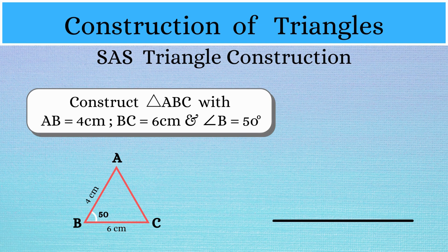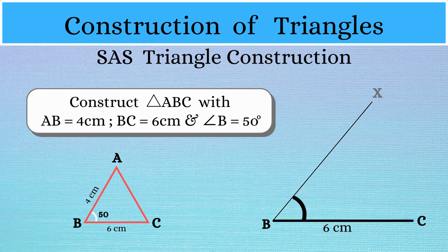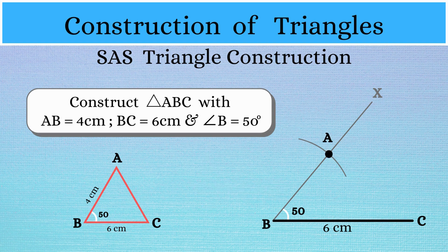Now to get started, let's draw the base of the triangle, a line segment BC with length 6 cm. Next, we'll construct angle B. Using your protractor, draw a ray BX such that angle XBC is equal to 50 degrees. Now we know that point A has to lie on this ray BX. From our question, we know that length AB is equal to 4 cm, so with B as the center and radius as 4 cm, let's draw an arc on the ray BX. This point of intersection is point A. So we'll join A and C, which will complete our triangle ABC with the given measurements.